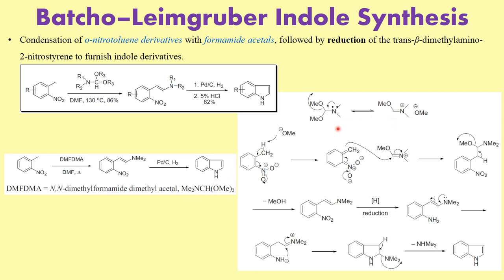Looking at the mechanism, it is pretty straightforward. DMF-DMA exists in equilibrium — when you carry out the reaction, it exists in a particular equilibrium where the nitrogen participates and the displacement is OMe. What you end up getting is the formation of an amine. Both of these species are going back and forth — they are in equilibrium. In this reaction, an O-methoxide is generated. The O-methoxide acts as a base to abstract a hydrogen from the methyl of the nitro compound.